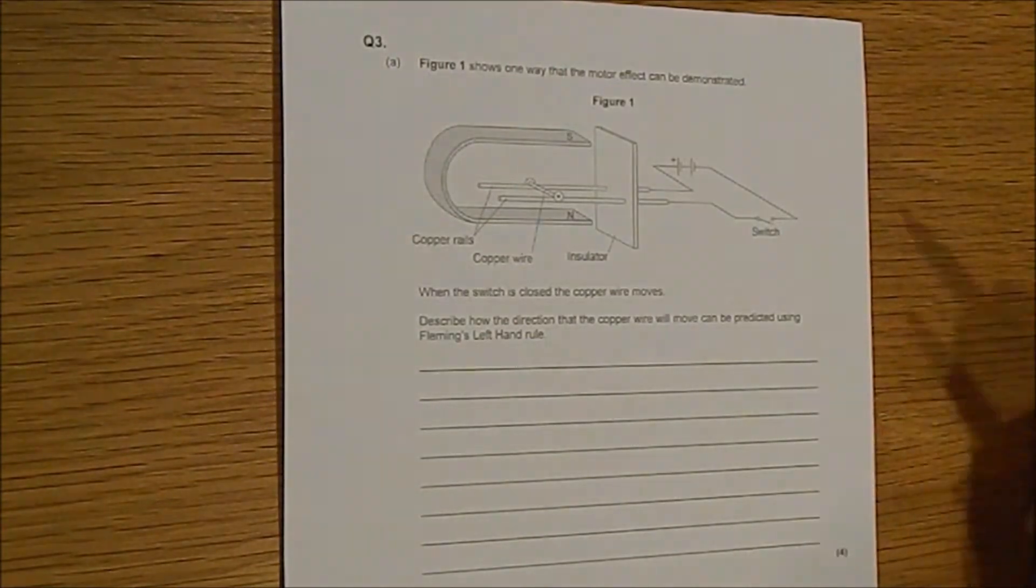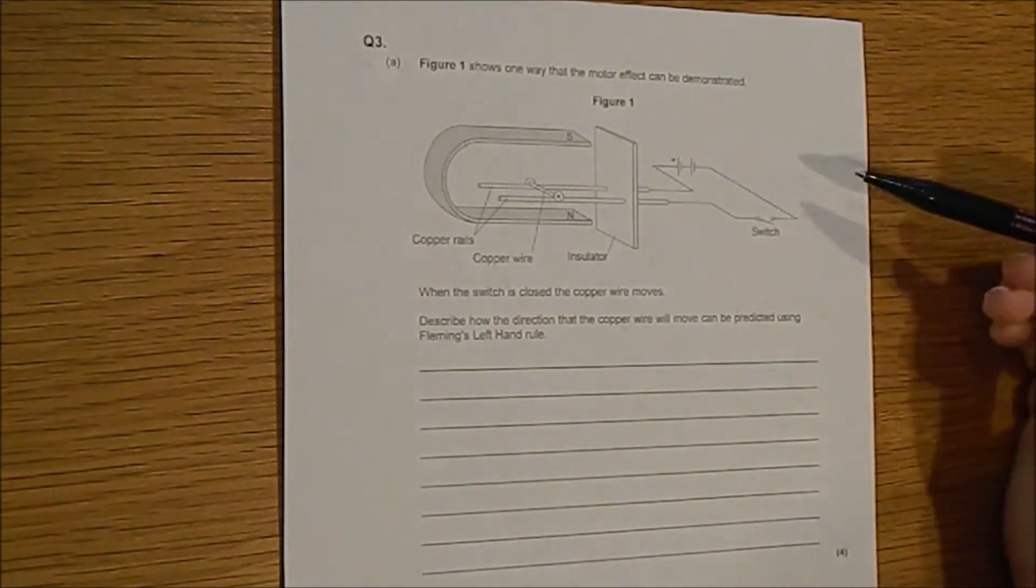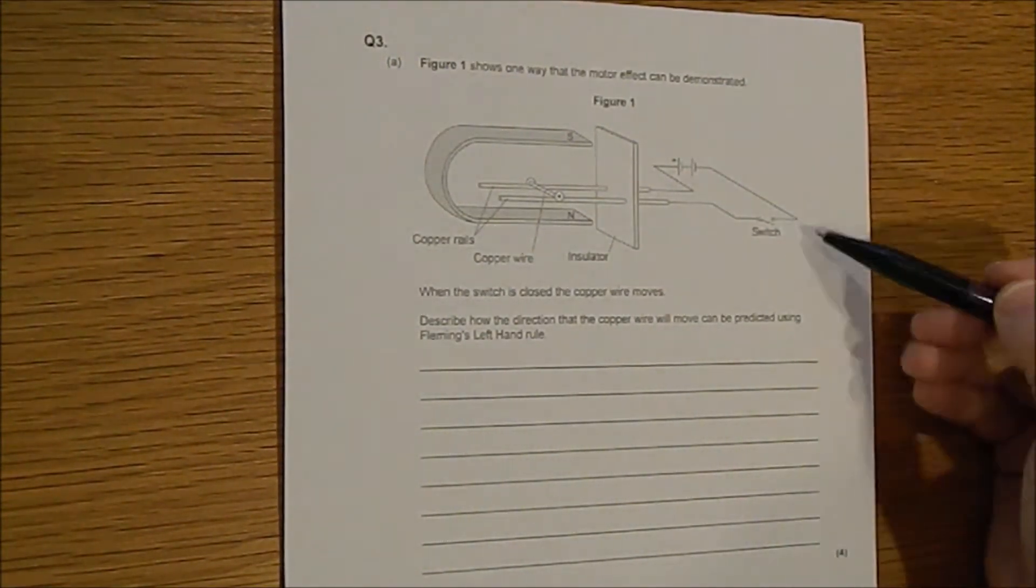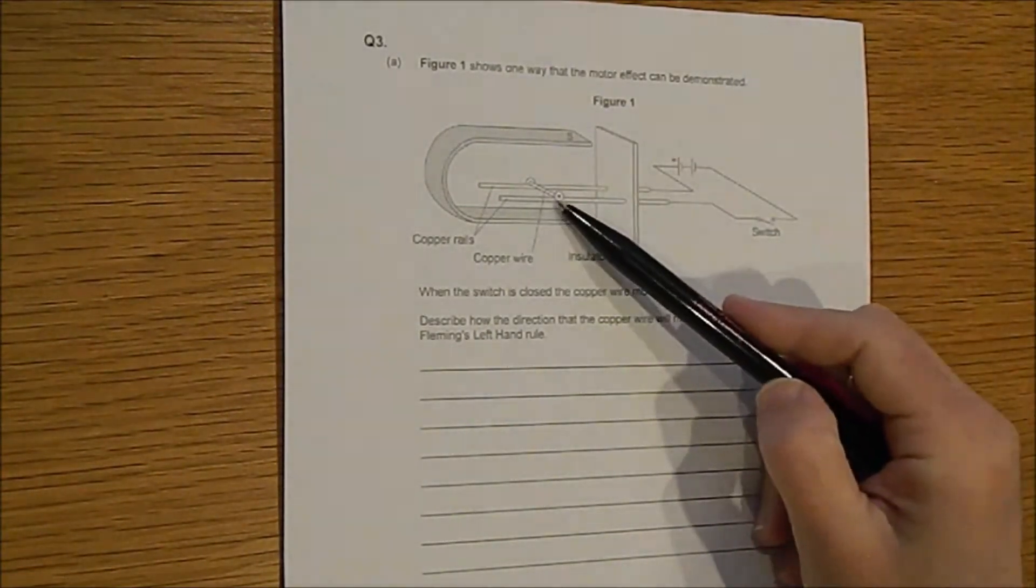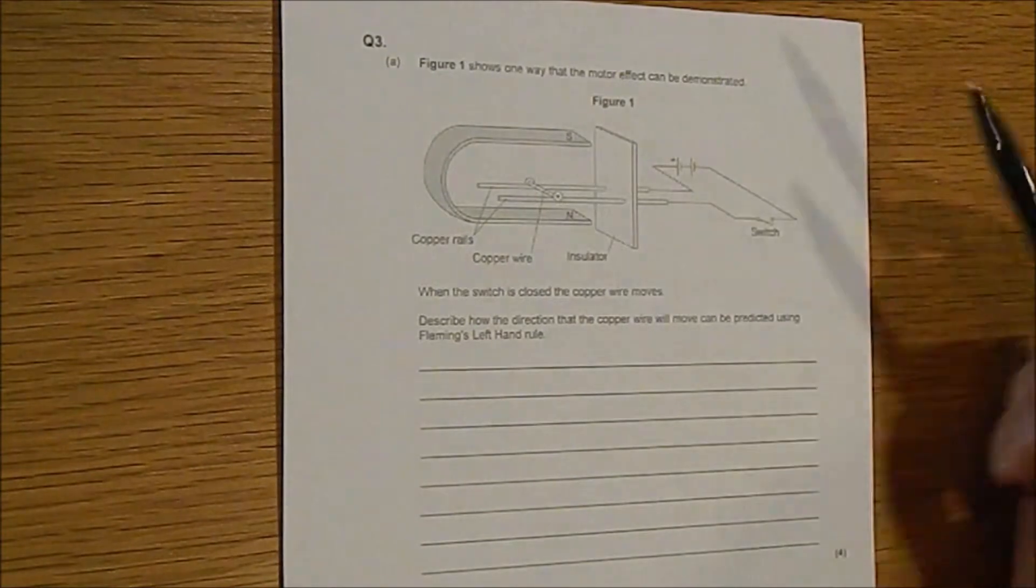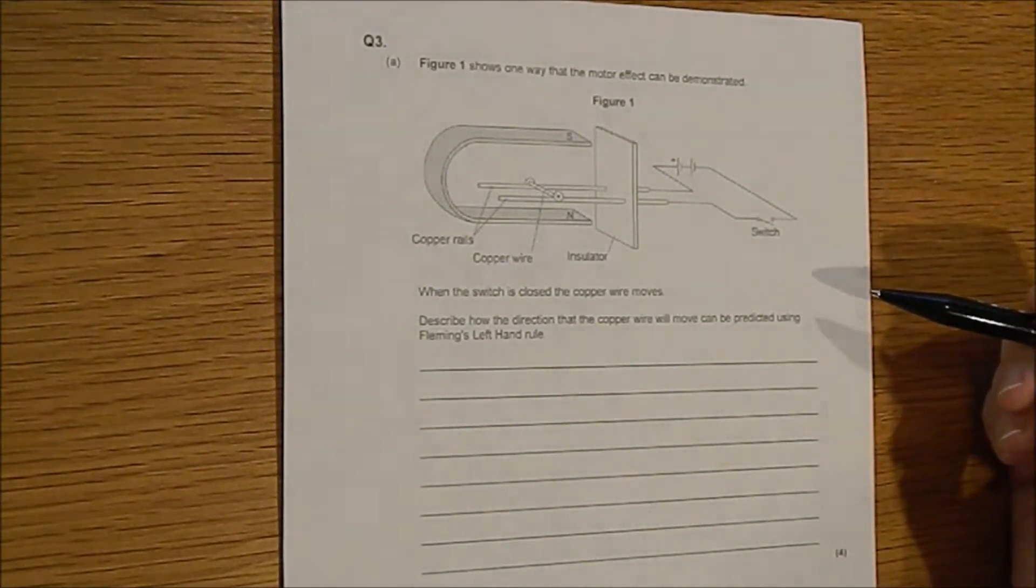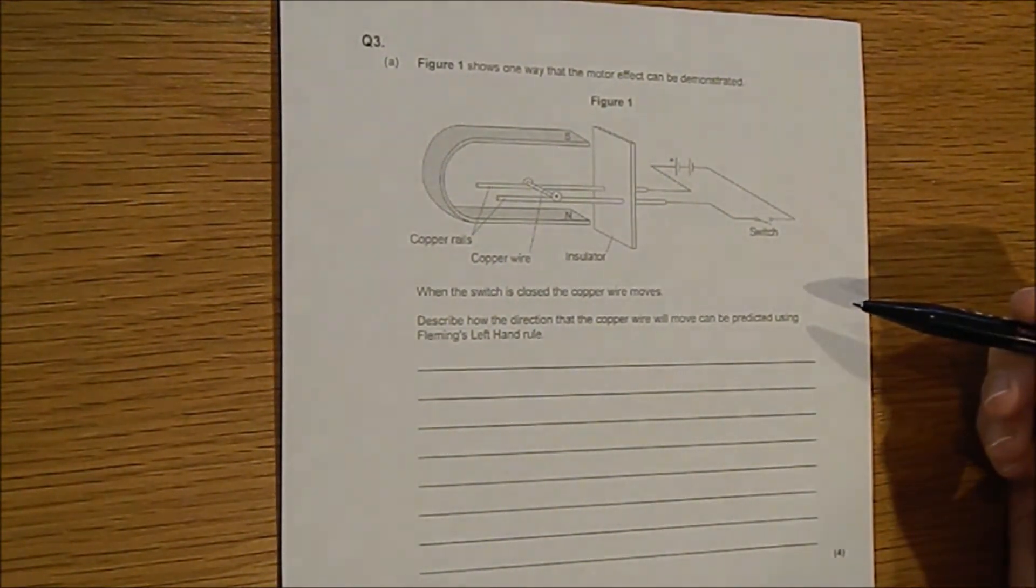This is worth four marks and what it says is when the switch is closed, which is here, the copper wire moves and here is the copper wire. Describe how the direction the copper wire will move can be predicted using Fleming's left-hand rule.